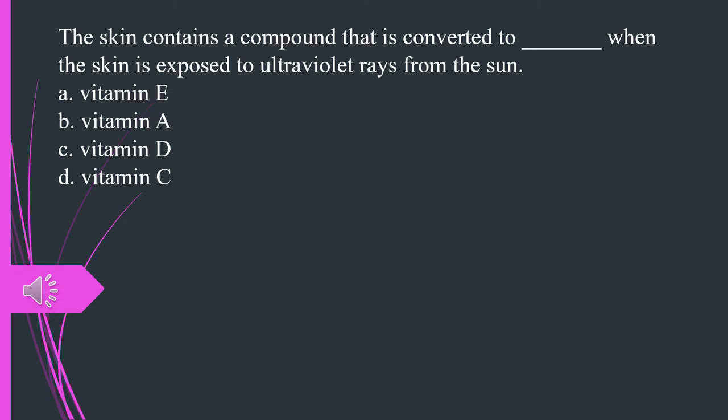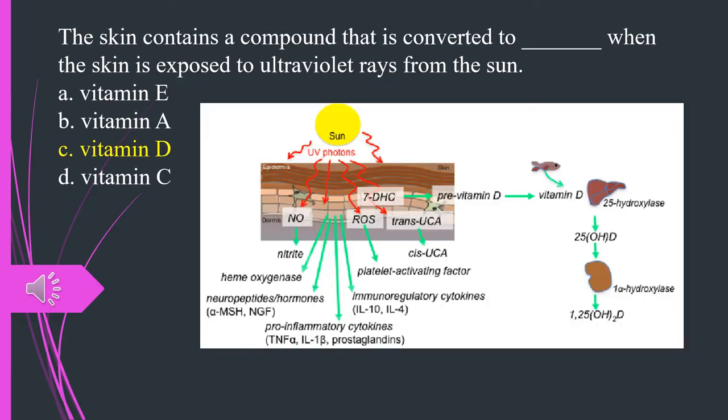The skin contains a compound that is converted to what when the skin is exposed to ultraviolet rays from the sun? A. Vitamin E. B. Vitamin A. C. Vitamin D. D. Vitamin C. The answer is C. Vitamin D.